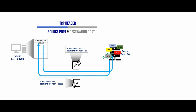So we have source port and destination port in our header fields. Whenever an operating system opens a web browser, it generates a random port number. That random port number is the source port. Whenever you open a browser to go to, say, facebook.com, the application protocol — HTTP or HTTPS — determines the destination port number.